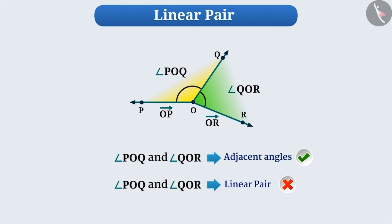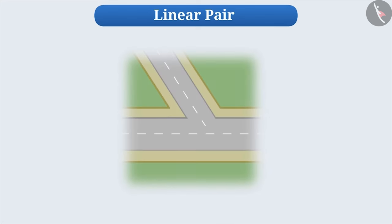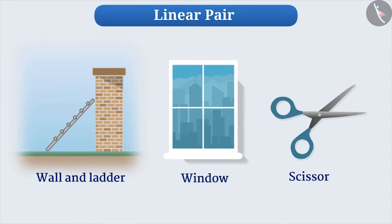You can find linear pair in many situations. For instance, when a book is placed on a table and one of its pages is open, then the angles formed on either side of it are linear pairs. When two roads intersect, they form a linear pair. Similarly, you can identify linear pairs in the following examples.